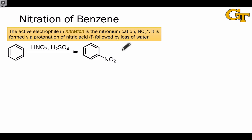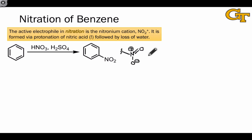Before diving into the mechanism, let's remind ourselves of the general structure of the nitro group, which is often written in abbreviated form. In the full structure, we find that the nitrogen atom has a formal positive charge, and one of the oxygen atoms has a formal negative charge, although this group has two resonance structures showing that the negative charge is shared over both oxygens. Because of the N–O π bond and the positively charged nitrogen, the nitro group is heavily electron withdrawing — one of our strongest electron withdrawing groups.